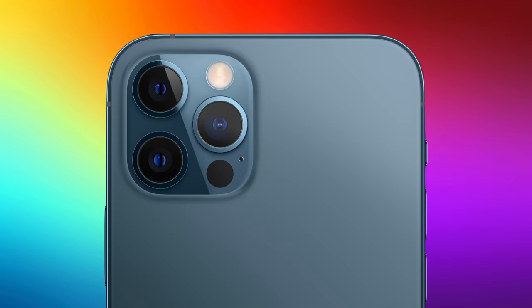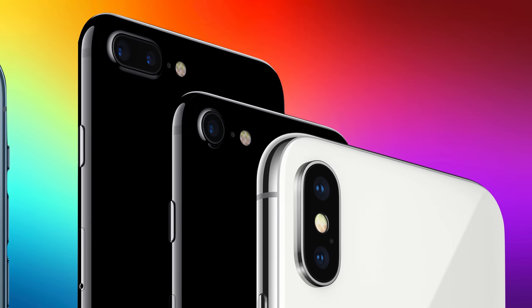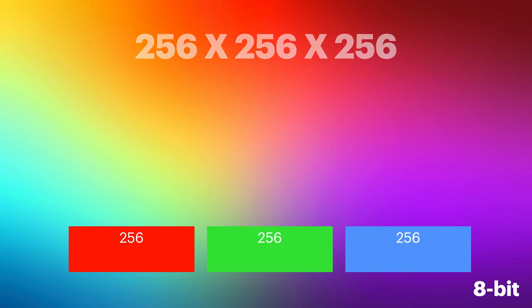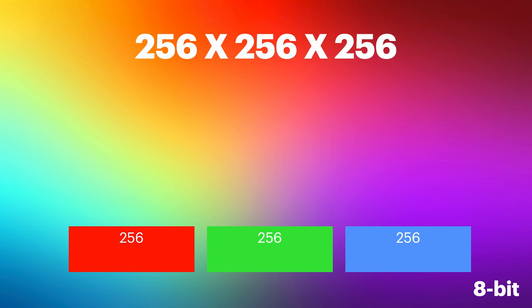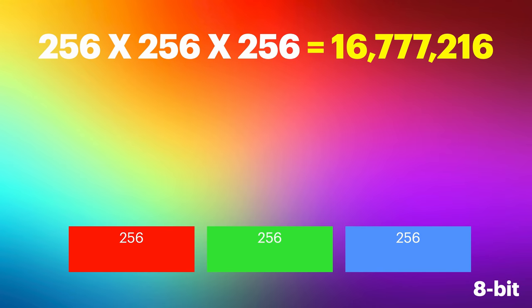Up until the release of the iPhone 12 series, all iPhones and most Android devices were limited to a color depth or bit depth of 8-bit for video. This means that for each channel of red, green, and blue, 256 tonal values or shades of each color could be recorded. If you multiply each channel's total color information, you arrive at the ability to capture just over 16.7 million different colors in 8-bit.